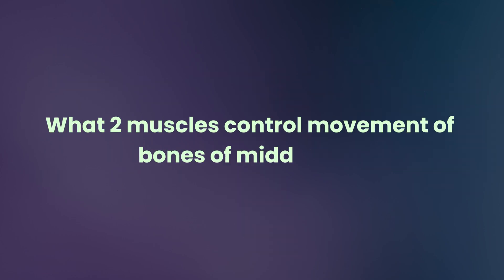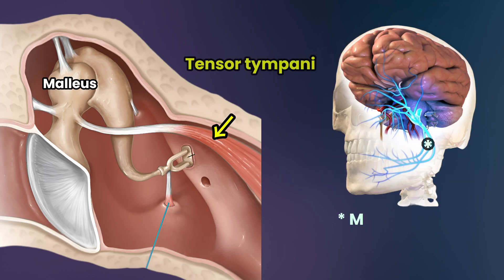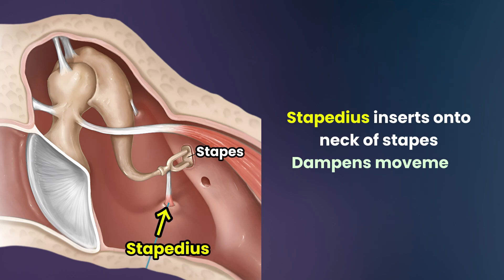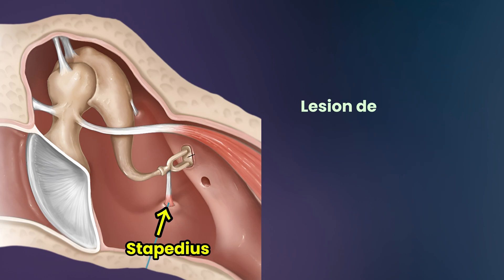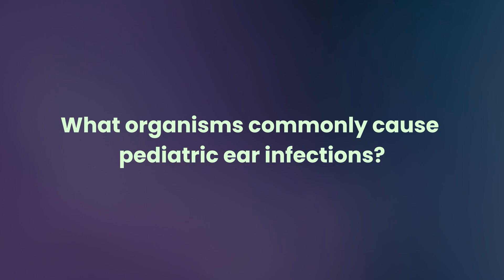Two muscles control the movement of the bones of the middle ear. The tensor tympani inserts on the malleus and dampens the amplitude of the tympanic membrane oscillations, which prevents damage to the inner ear from loud sounds. Its innervation is by the mandibular nerve, the third branch of cranial nerve 5. The stapedius inserts onto the neck of the stapes and dampens movement of this ossicle. The stapedius is innervated by the facial nerve, cranial nerve 7. A lesion denervating the stapedius causes hypersensitivity to sound, known as hyperacusis.